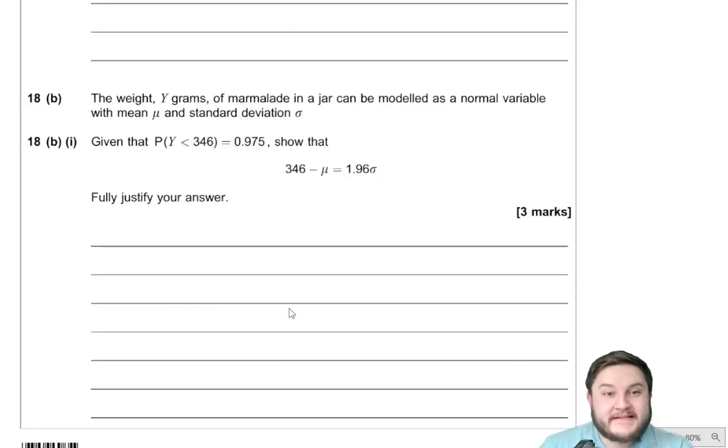Right, then part B says, the weight of Y grams of marmalade in a jar can be modeled as a normal variable with mean of mu and standard deviation of sigma. Given the probability that Y is less than 346 is equal to 0.975, show that 346 minus mu is equal to 1.96 sigma.